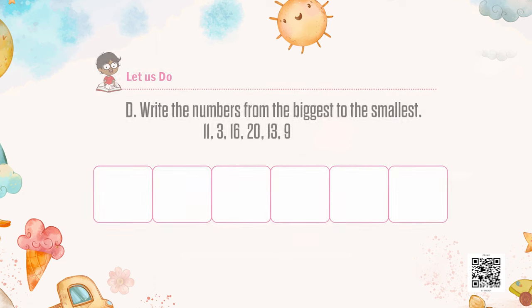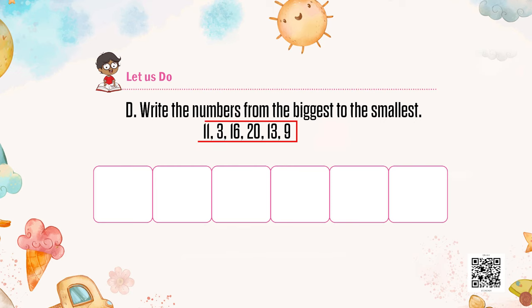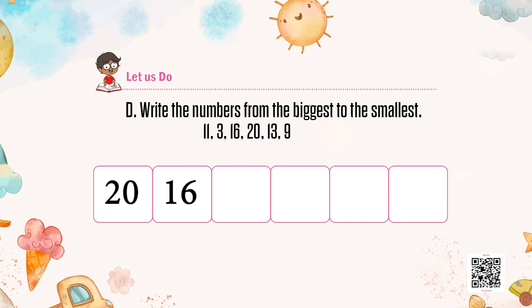In the next task, we have some numbers that are jumbled up — mixed up and not in sequence. We have to arrange them from biggest to smallest. Arnav, what is the biggest number here? 20. And then? 16. Move ahead: 13, then 11, then 9, and the smallest? 3. Amazing! So Arnav has helped you in arranging the numbers from biggest to smallest.